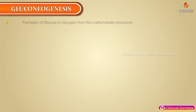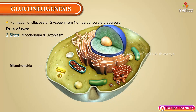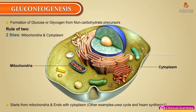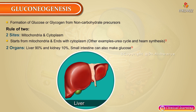Gluconeogenesis is the process of formation of glucose or glycogen from non-carbohydrate precursors. Rule of two for gluconeogenesis: two sites — mitochondria and cytoplasm. It starts from the mitochondria. Other examples sharing two sites are the urea cycle and heme synthesis.